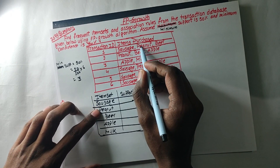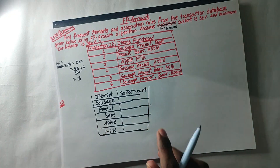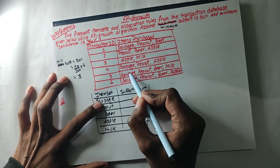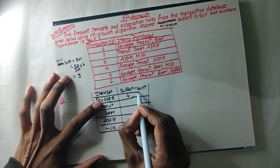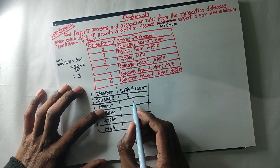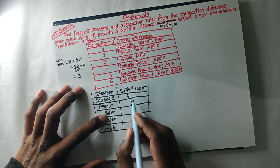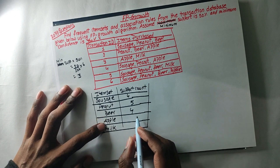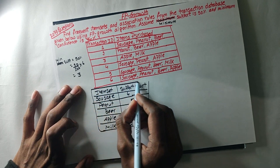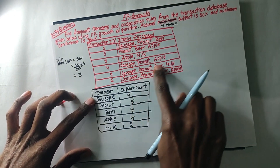Sausage, peanut, beer, apple, milk. Sausage: 1, 2, 3, 4, 8. Peanut: 1, 2, 3, 4, 8. Beer: 1, 2, 3, 4, 9. These are the first items, which are different from each other.